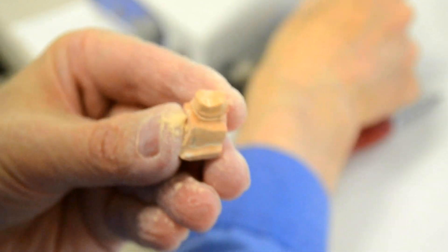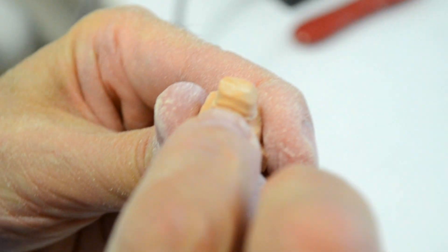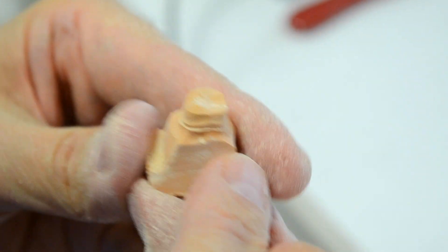I've just about completed that aspect of die trimming, and as you can see now, we're left with a small lip of gypsum product that represents part of the free gingival margin.